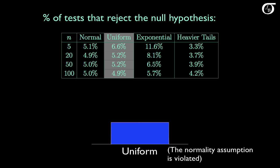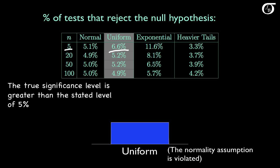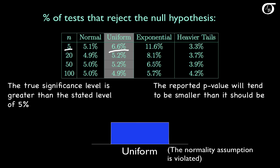What happens when the normality assumption is violated? Here we're sampling from a uniform distribution, which is definitely not normal. When the sample size is 5, we state a significance level of 5%, but the true significance level is closer to 6.6% — we're rejecting the null hypothesis a little too often, and the reported p-value tends to be too small. As the sample size increases, that problem starts to go away and the percentage of rejections gets very close to 5%.